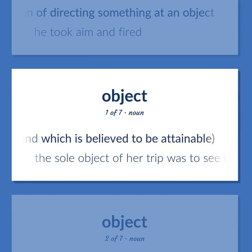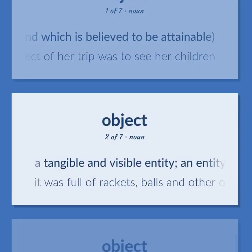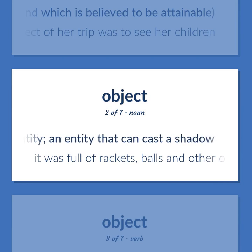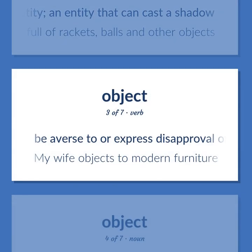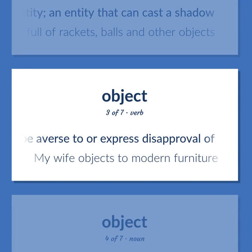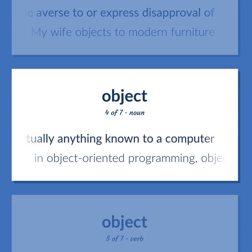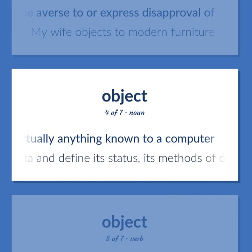The sole object of her trip was to see her children. Object: a tangible and visible entity — an entity that can cast a shadow. It was full of rackets, balls, and other objects. Be averse to or express disapproval of. My wife objects to modern furniture. Computing: a discrete item that provides a description of virtually anything known to a computer. In object-oriented programming, objects include data and define its status, its methods of operation, and how it interacts with other objects.